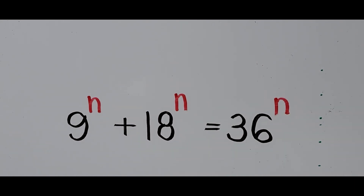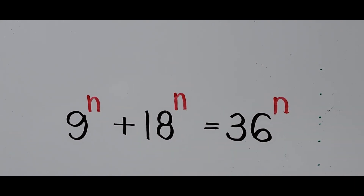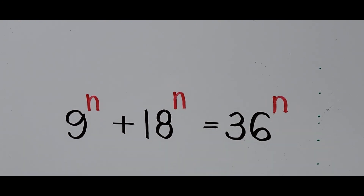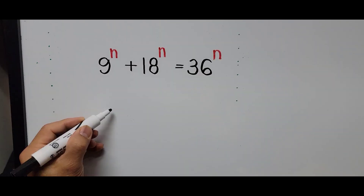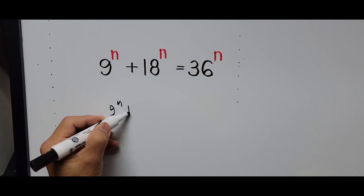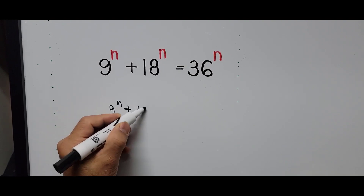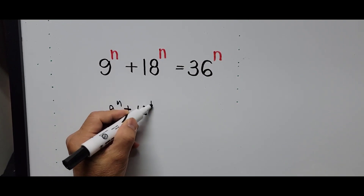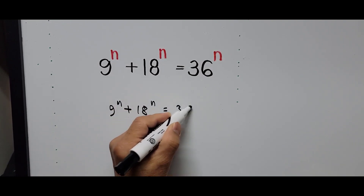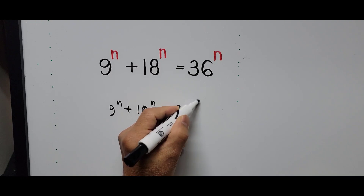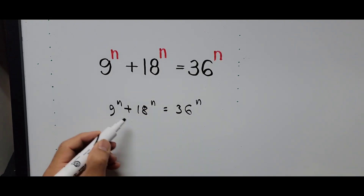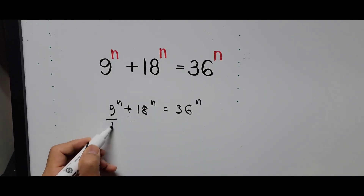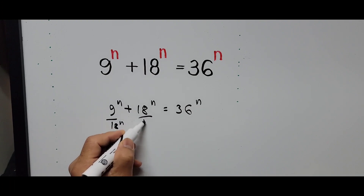It's just a matter of choice which term you want to divide the equation with. Here I'm choosing to divide the whole equation by 18 to the power of n. So: 9^n plus 18^n equals 36^n, dividing the whole equation by 18^n.